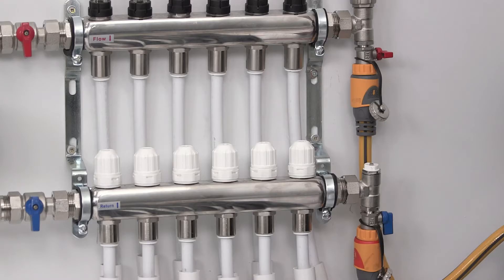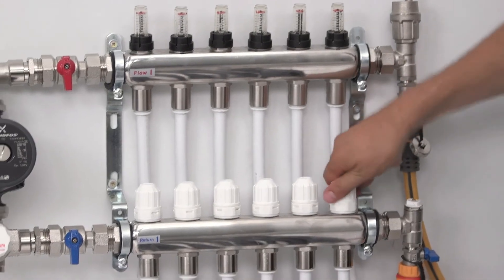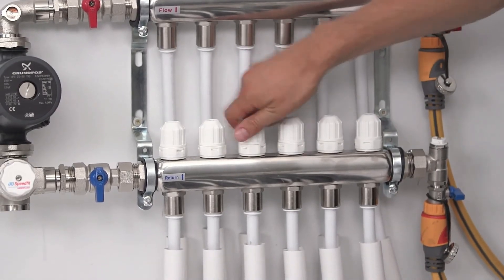It's important to ensure that water is forced around the UFH loops one at a time to prevent short circuiting from one manifold rail to the other. First, close all the decorators caps to isolate the circuits.